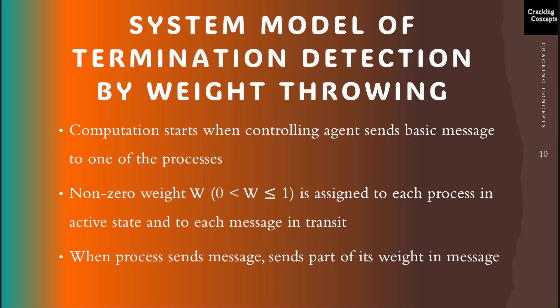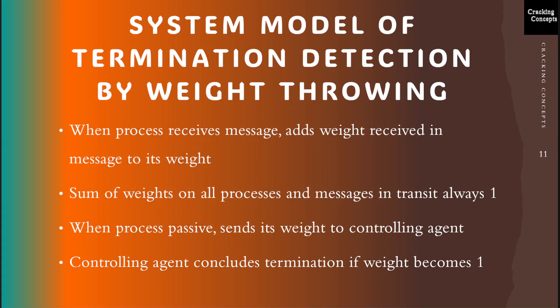When a process receives a message, it adds the weight received in the message to its own weight. Thus the sum of weights on all the processes and on all the messages in transit is always 1. When a process becomes passive, it sends its weight to the controlling agent in a control message, which the controlling agent adds to its weight. The controlling agent concludes termination if its weight becomes 1.